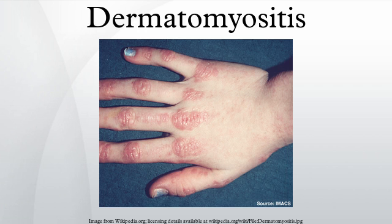Dermatomyositis occurs more commonly in female patients. The initial symptoms may vary considerably, from dysphagia and feverish sensations, to most often proximal symmetrical muscle weakness with vasculitis affecting the skin, muscles, and internal organs. Patients find it hard to raise their arms to comb their hair or walk up stairs due to the proximal muscle weakness. It can be severe enough to affect the muscles needed for speech or swallowing and is also known to cause respiratory compromise.